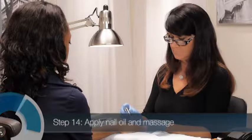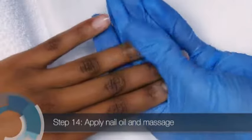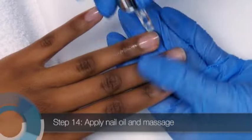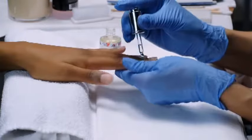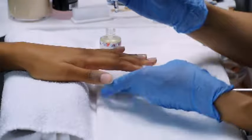Next, apply nail oil to the nail plate with a cotton-tipped wooden pusher, a cotton swab, or an eye dropper. Start with a little finger on the left hand and massage the oil into the nail plate and the surrounding skin using a circular motion.